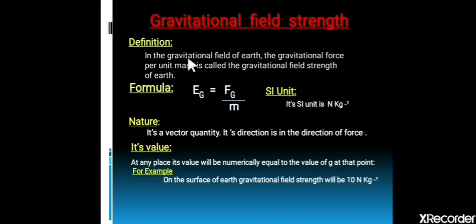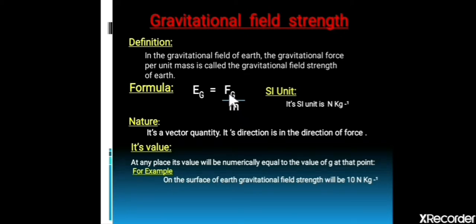What is gravitational field strength? In the gravitational field of the Earth, the gravitational force per unit mass is called the gravitational field strength of the Earth. The formula is: EG = FG / M, where EG is the gravitational field strength, FG is the force of gravitation of the Earth, and M is the mass of the object. Substituting SI units — Newton for force and kilogram for mass — gives the SI unit of gravitational field strength as Newton per kilogram.